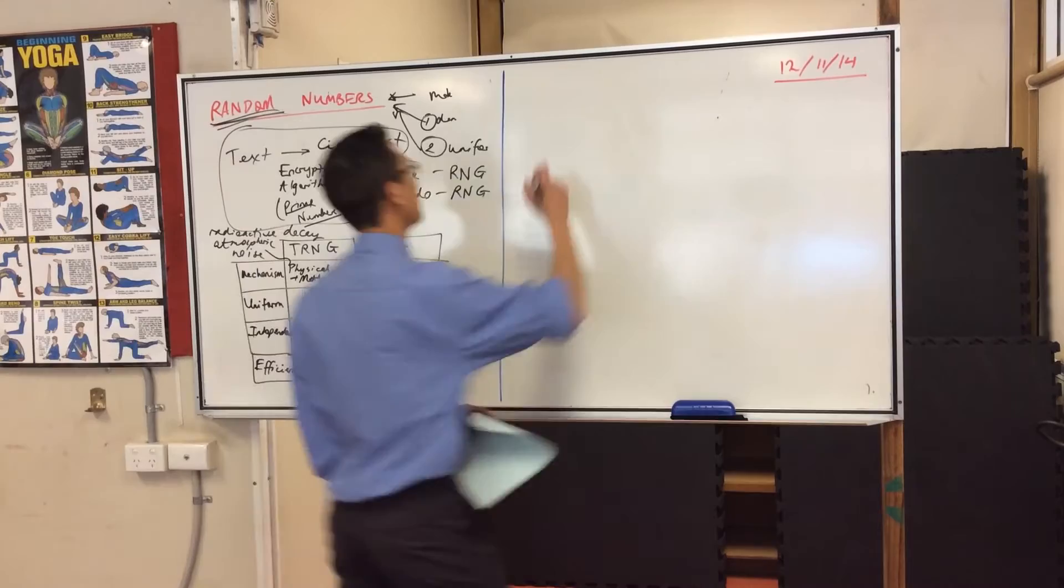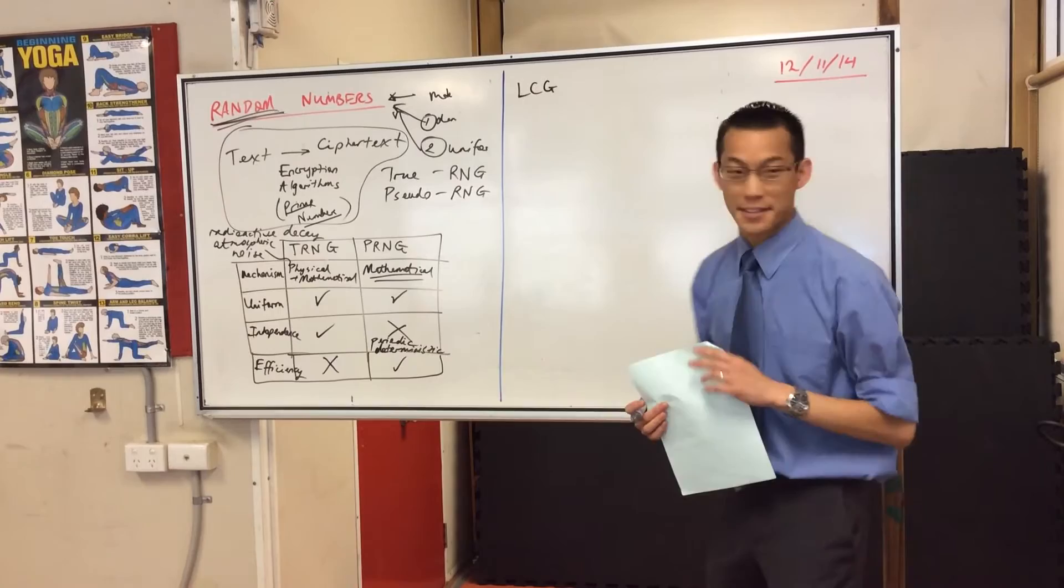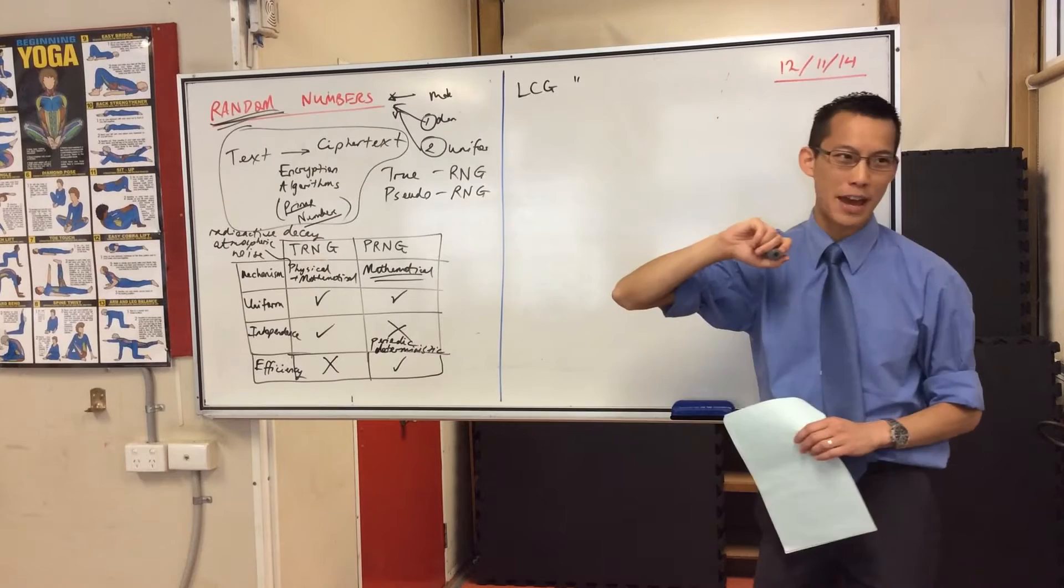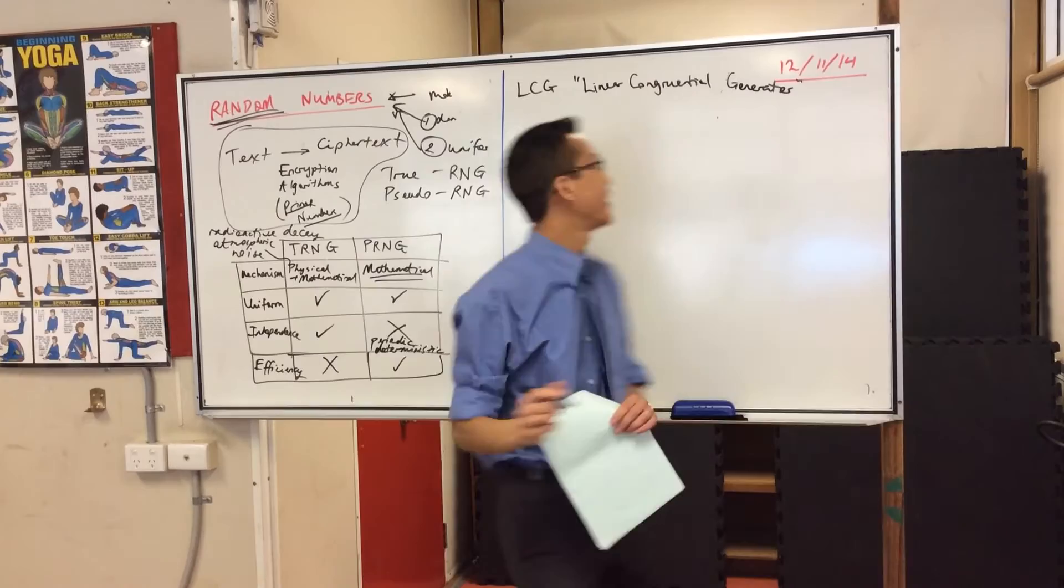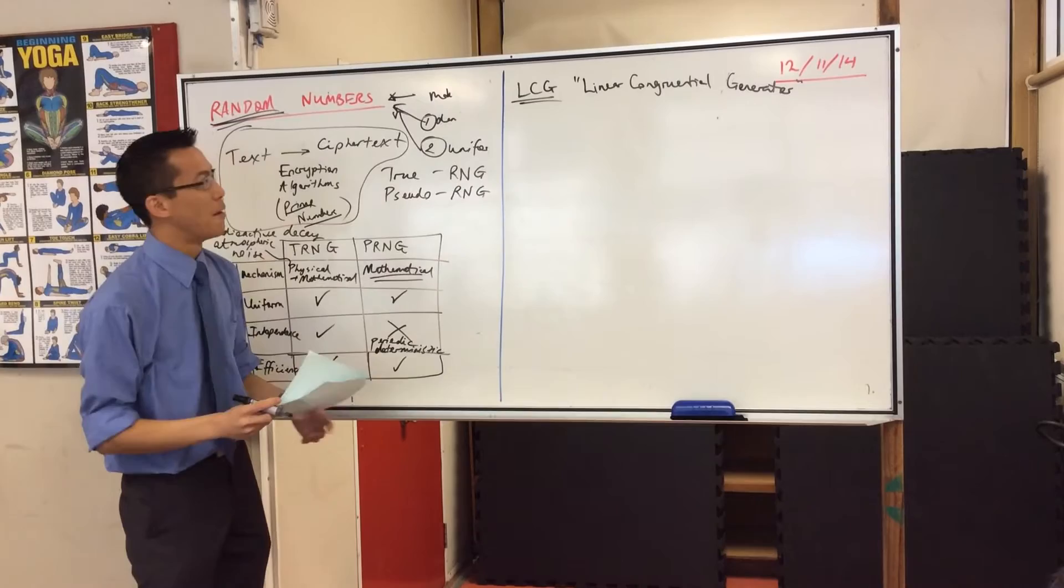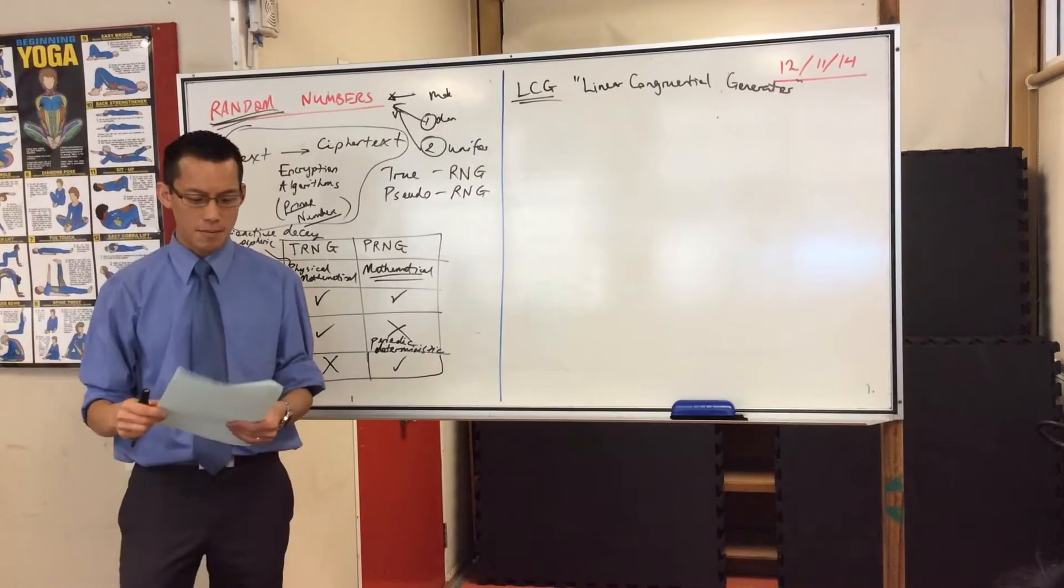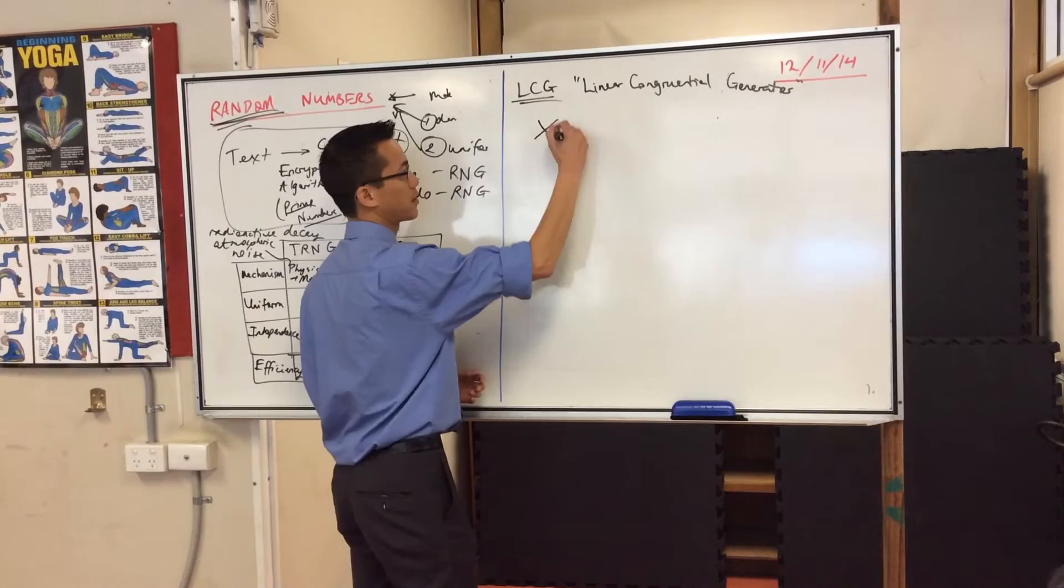Alright, so the pseudo random number generator I'm going to teach you today is pretty simple. It's called the LCG or I'm giving you the acronym because the full name is a bit awkward. It's the linear congruential generator. LCG is a bit better.